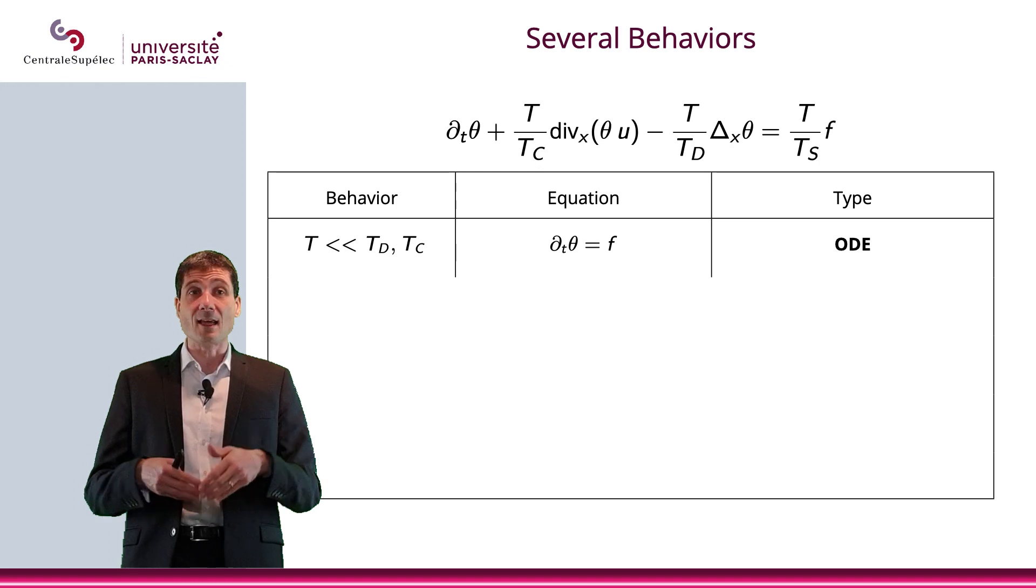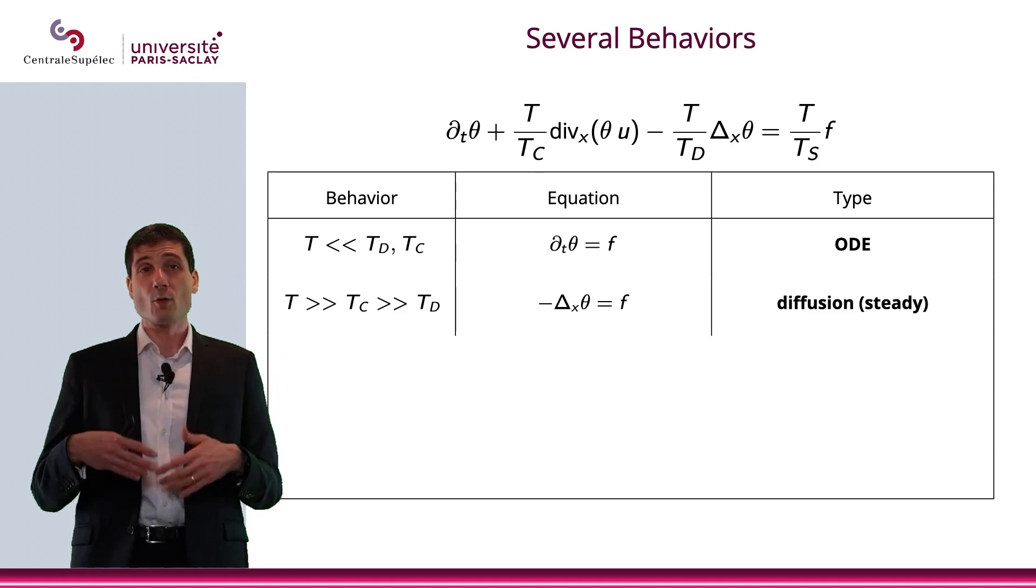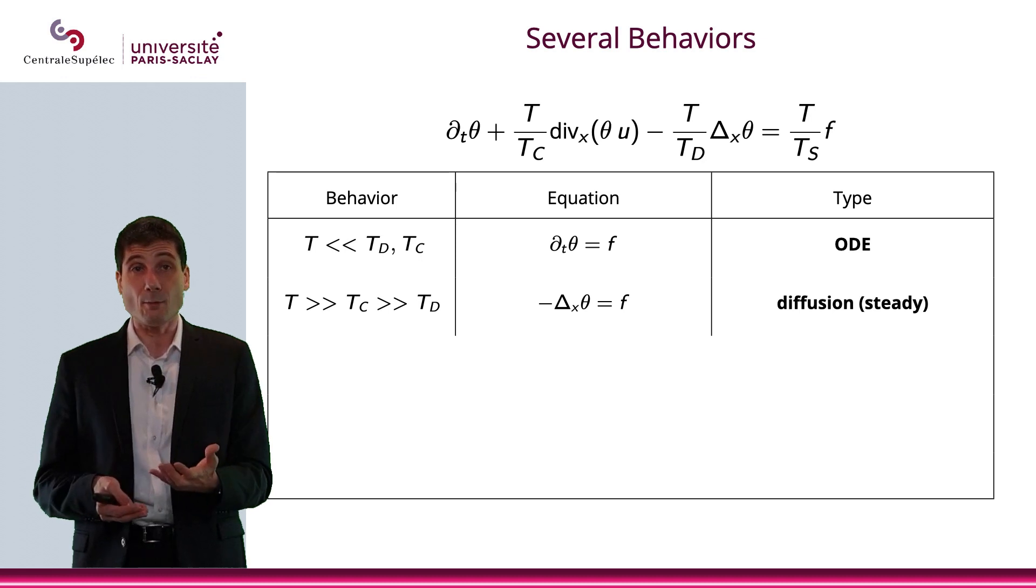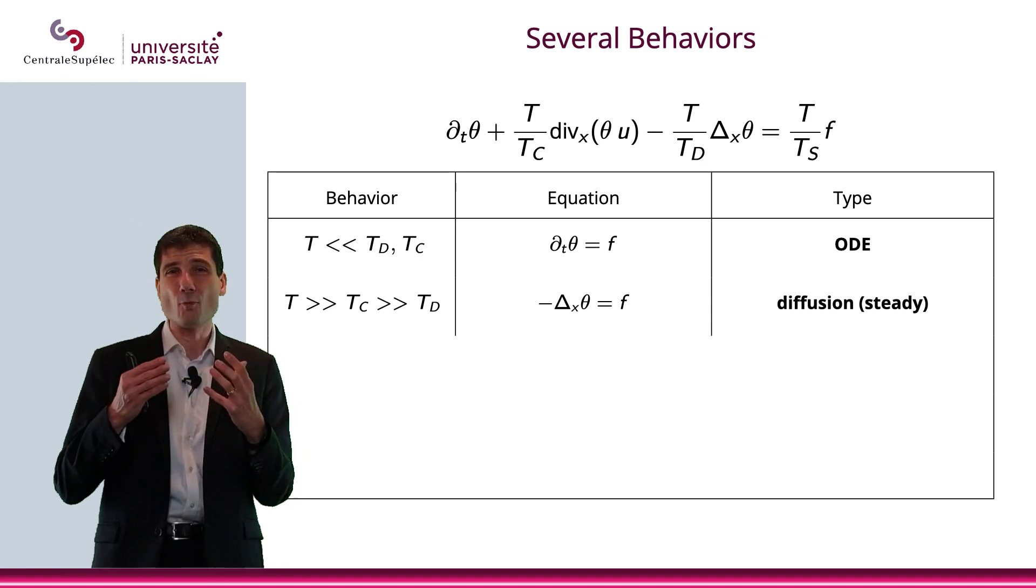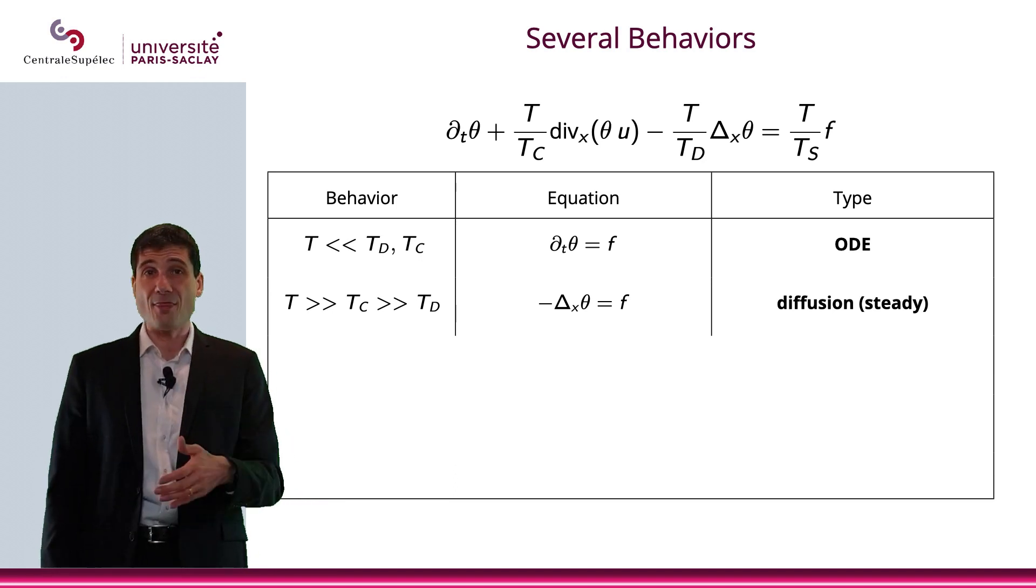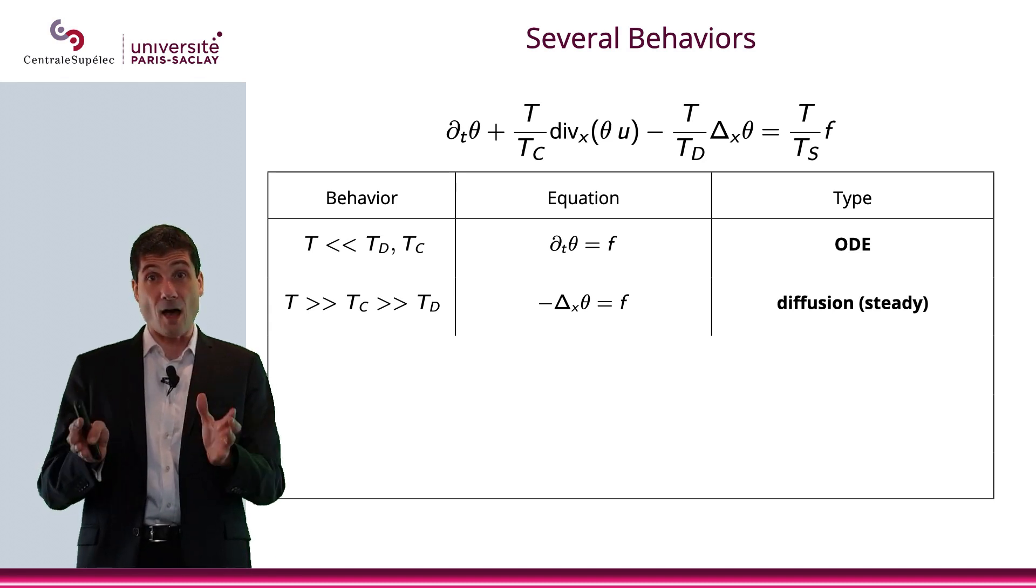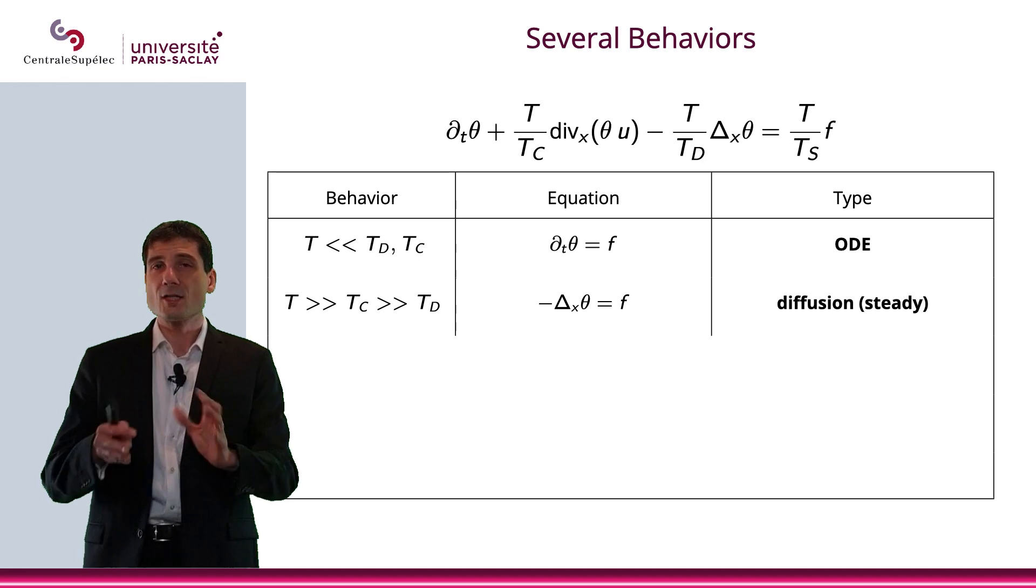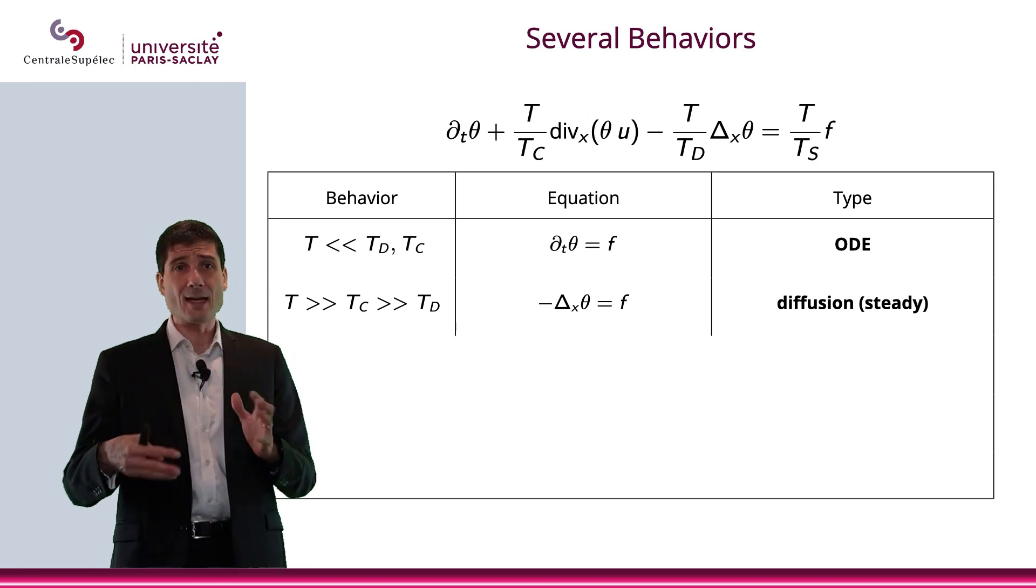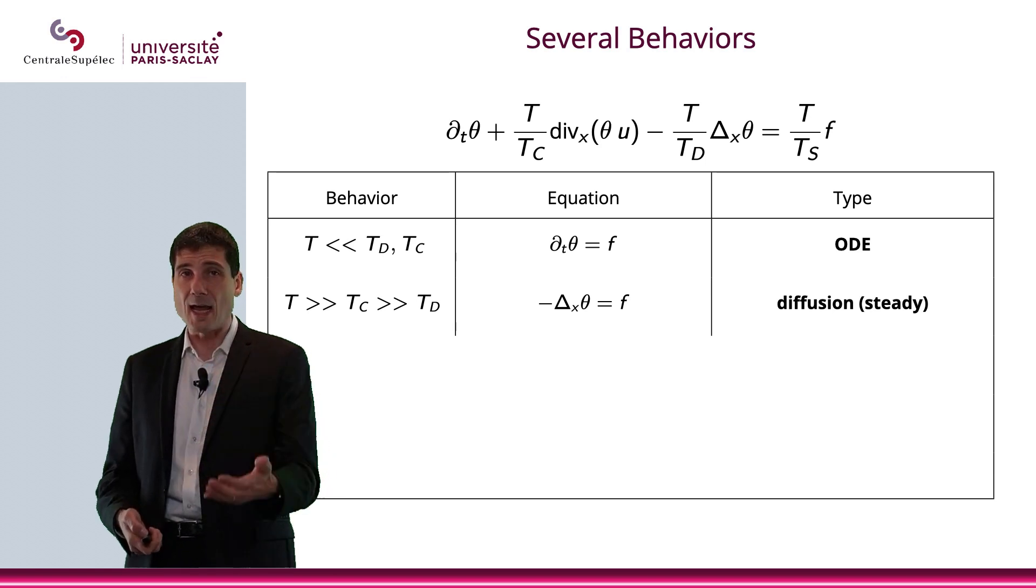The other possibility is if we have T greater than Tc, much greater than Tc, which is also much greater than Td. In this case, when you actually just look at what is close to zero, you just see that what really remains is minus Laplace operator equals f. And that is called the diffusion equation in steady case, steady, because obviously that is not depending on time. Somehow what we're saying is T is really large, so somehow the system has reached an equilibrium. And now we're just looking at what is this equilibrium. This is why we have a steady state equation.